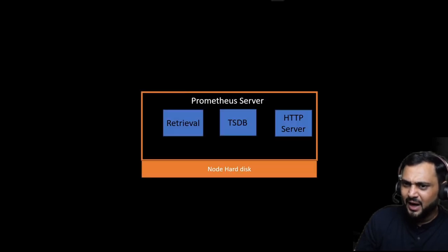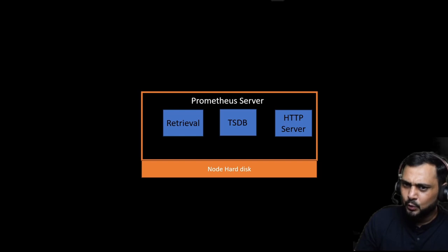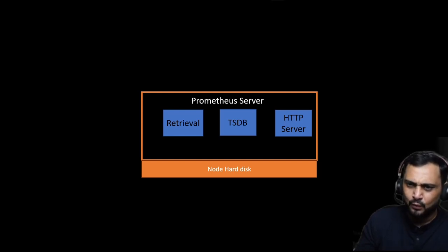Now I will explain the architecture of the Prometheus server — this is very important so please watch this section carefully. As I mentioned earlier, Prometheus is mainly a pull-based metrics tool. In Prometheus we have three core components. The first is retrieval, which is responsible for pulling metrics such as RAM, CPU, disk utilization, and more from the client machine.